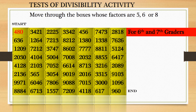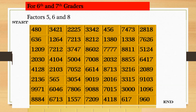From 636, move to 1264, which is a multiple of 8. Keep on moving till you reach the end. Start from 480, move to 636 which is a multiple of 6. Then 1264, multiple of 8. Then 7212, multiple of 6. Then 4104, multiple of 6. Then 504, multiple of 6. Then 708, multiple of 8. Then 2032, multiple of 8.